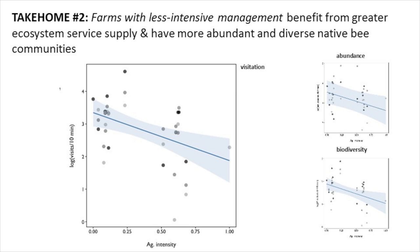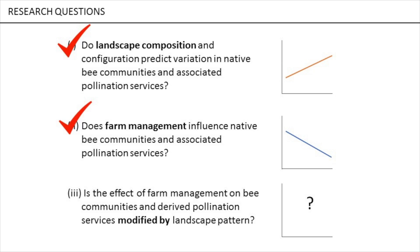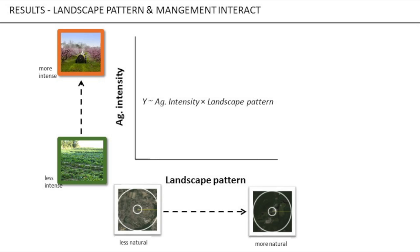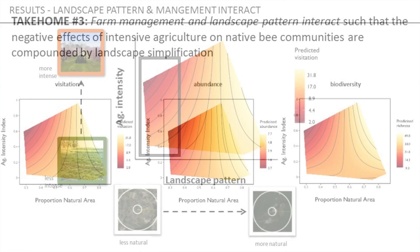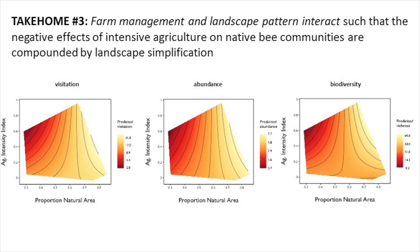But the interaction is what I'm really excited to talk about. In this next figure, I'm putting these two gradients on independent axes and showing values from a model with a management-landscape pattern interaction term. We can see areas of red — low predicted visitation — and areas of yellow — high predicted visitation. As you increase the amount of natural area in the landscape, the effect of management, that agricultural intensity, isn't as pronounced. But in areas with little natural area, management really matters. And this relationship holds true for the abundance and biodiversity of bees. Farm management and landscape pattern interact such that the negative effects of intensive agriculture are compounded by landscape simplification.